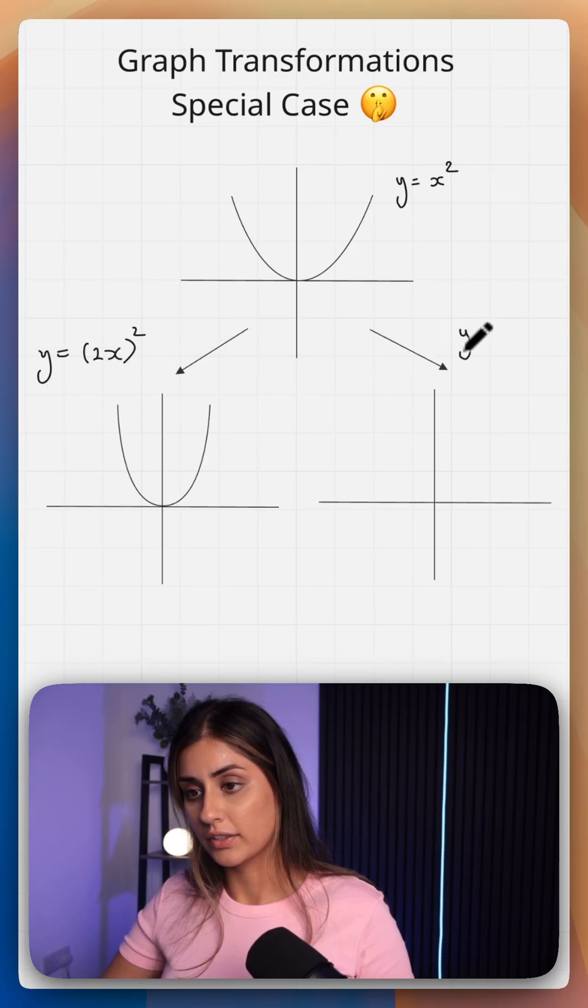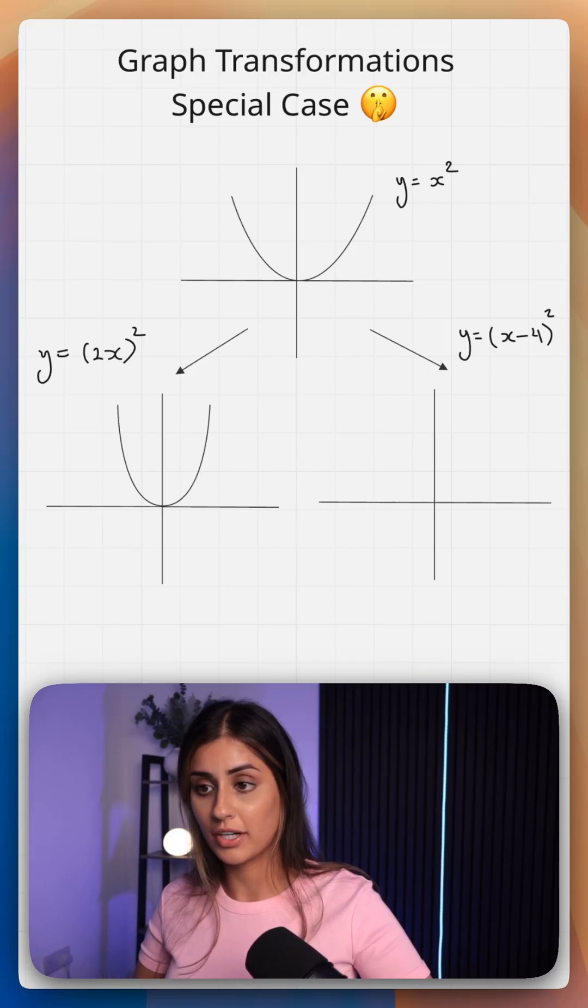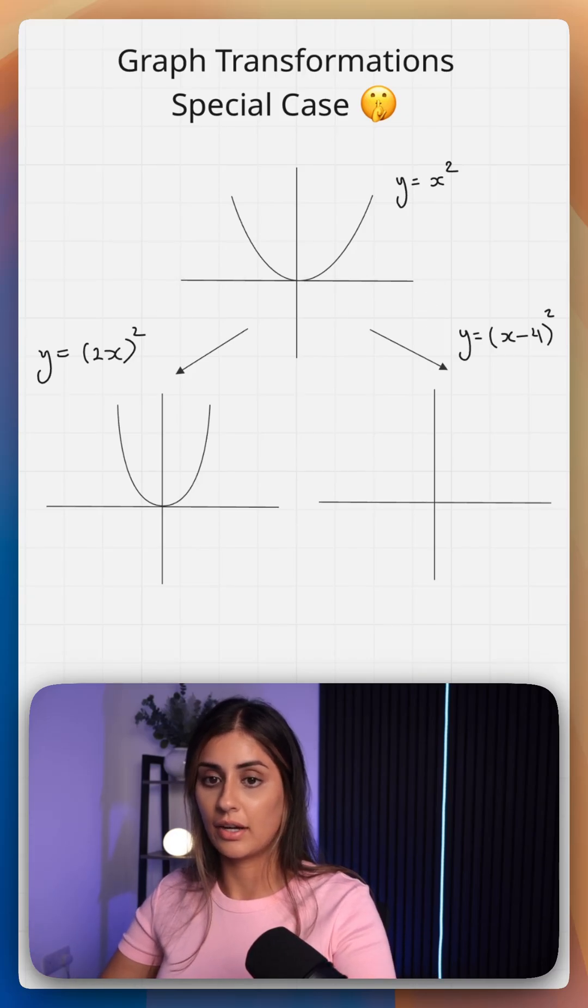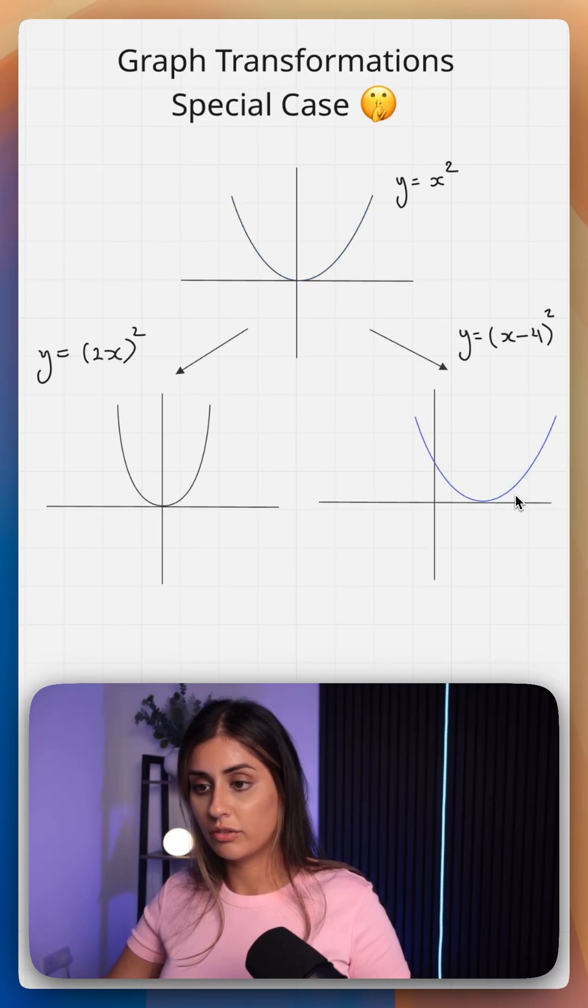Let's also look at the transformation y equals x minus 4 squared. This is inside the bracket, however, it's an addition or subtraction, which is shifting our graph, and this is taking our graph four units to the right.